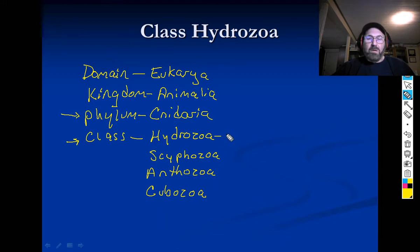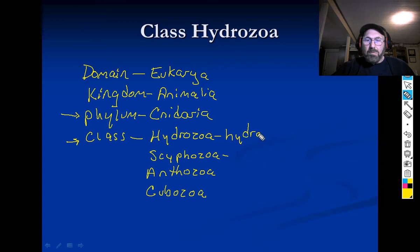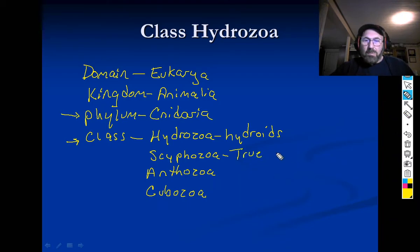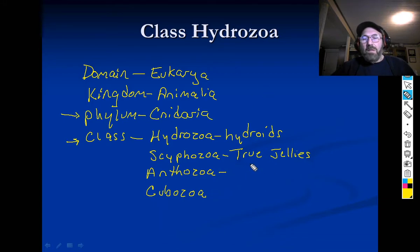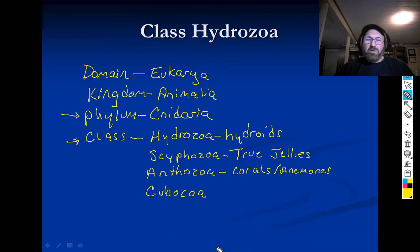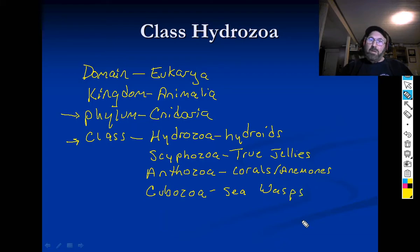Hydrozoa — the common name for them is hydroids. They're a small, indistinct group; you don't see them unless you're looking for them. The Scyphozoa are the true jellyfish. The Anthozoans are the corals and anemones — they also include gorgonians and sea fans.